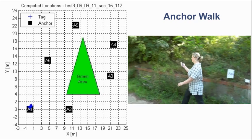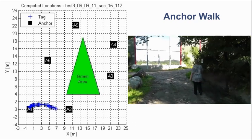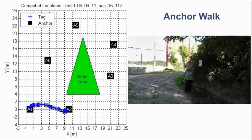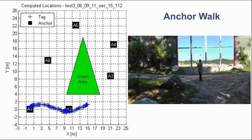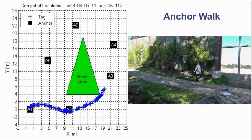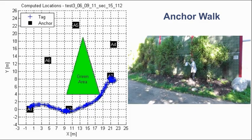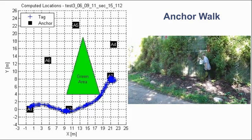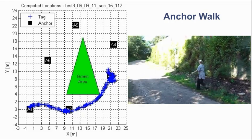Having computed anchor positions, it is now possible to proceed with tag localization. With the next experiment we will check how well tag and anchor localization work in the chosen scenario. The walk starts at A1 and all further anchors are passed sequentially. While walking, the tag ranges with the anchors in order to compute its position. By comparing the real-time plot of computed tag positions on the left side with the video on the right side, it is obvious that the tag is accurately tracked.